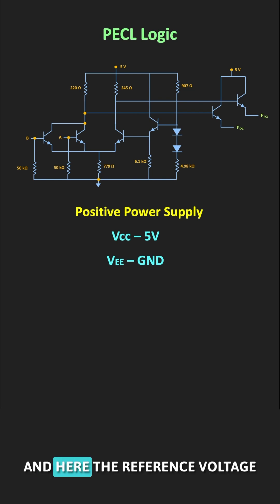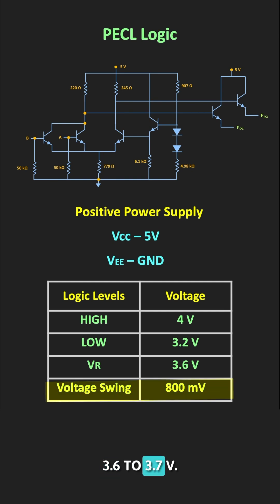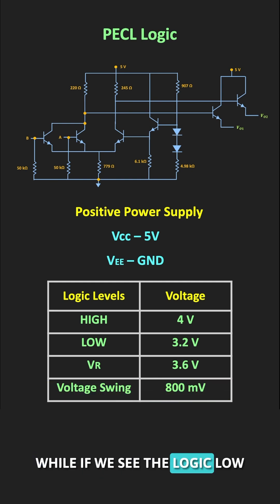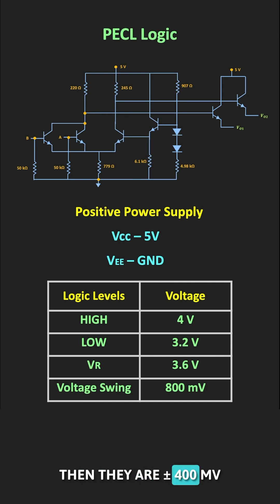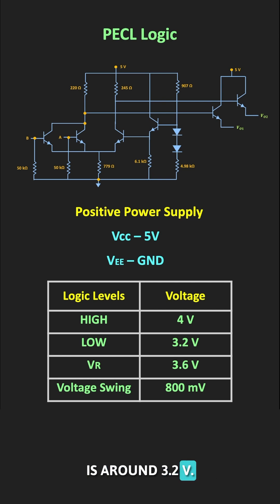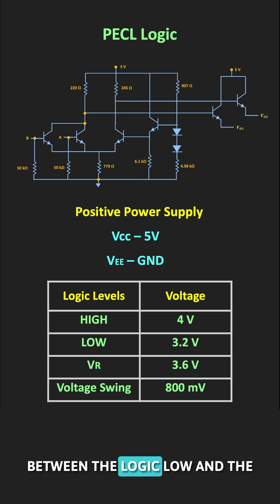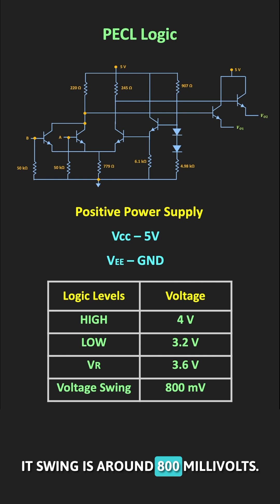The reference voltage generated internally in the PECL circuit is around 3.6 to 3.7V. The logic low and logic high voltages are plus or minus 400mV around that reference voltage, meaning the logic high is 4V while the logic low is around 3.2V. The difference between logic low and logic high, or the voltage swing, is around 800mV.